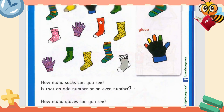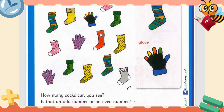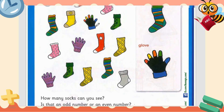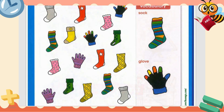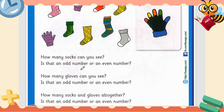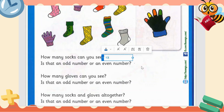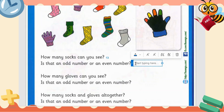How many socks can you see? Let's count: 1, 2, 3, 4, 5, 6, 7, 8, 9, 10, 11, 12, 13. So the total number of socks is 13. Is 13 an odd number or an even number?